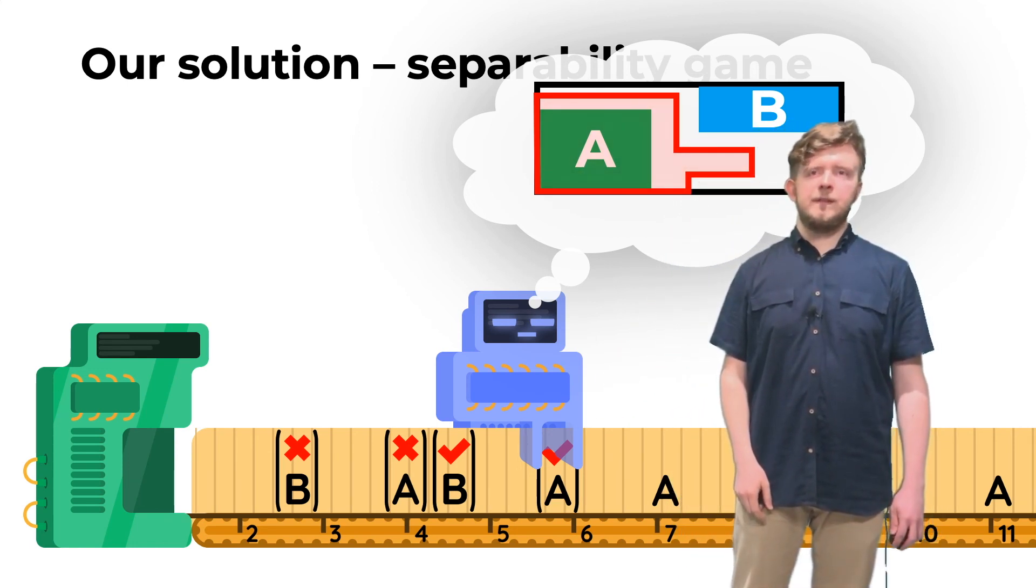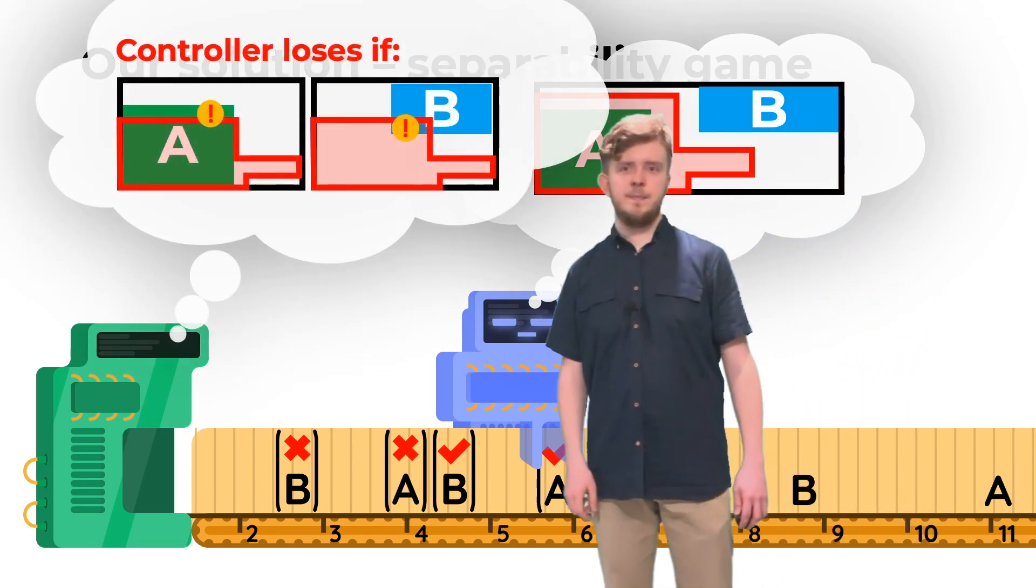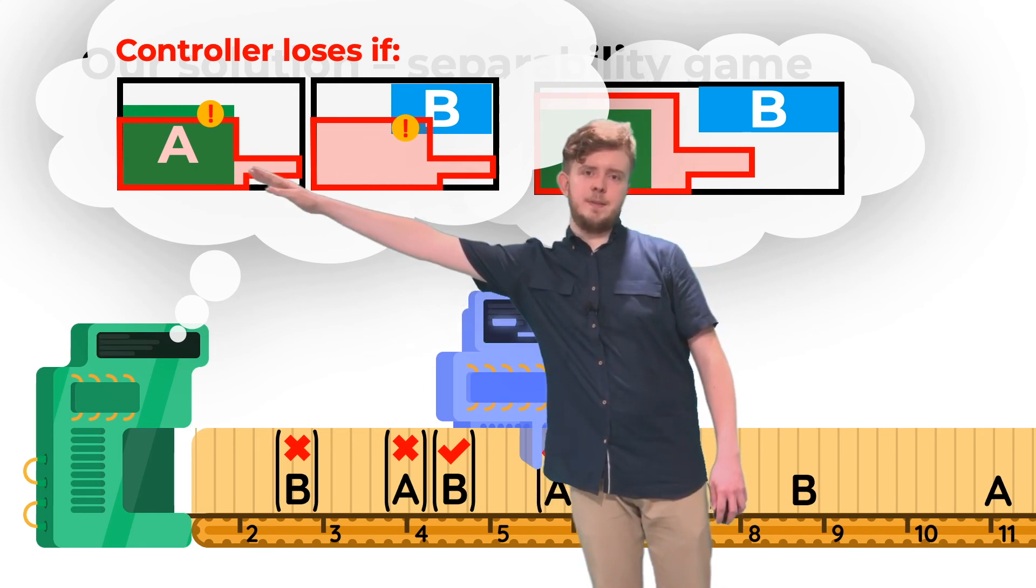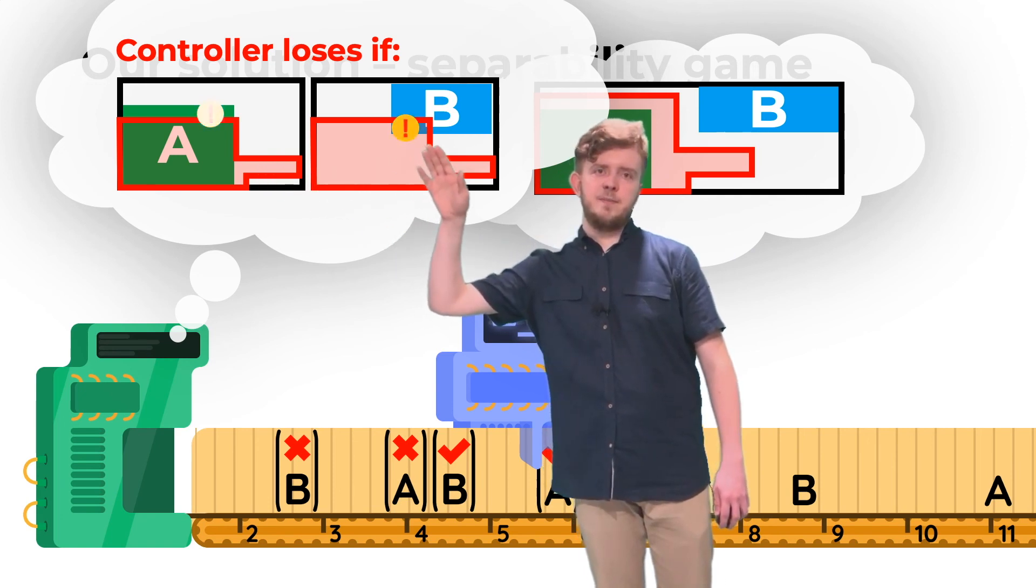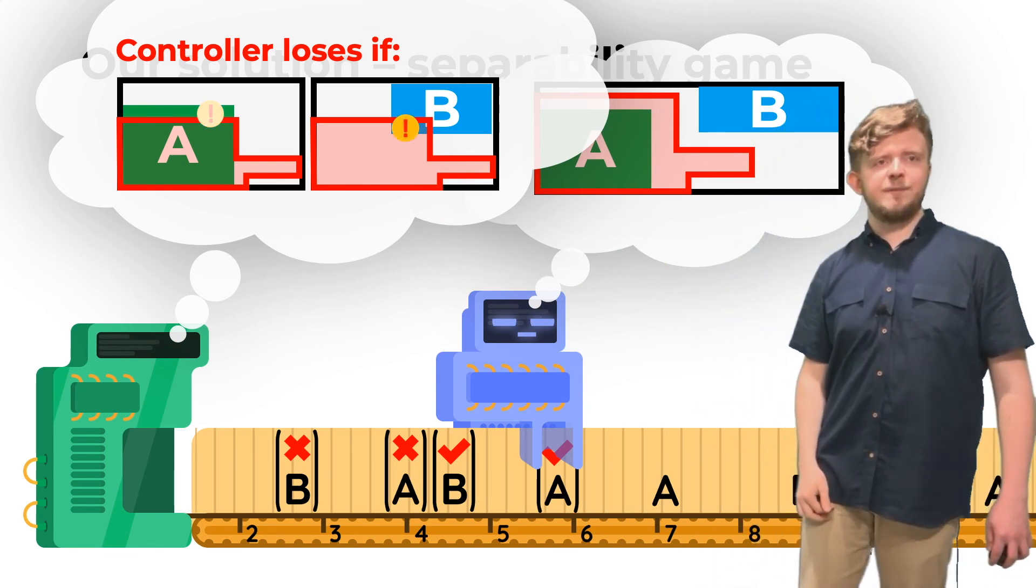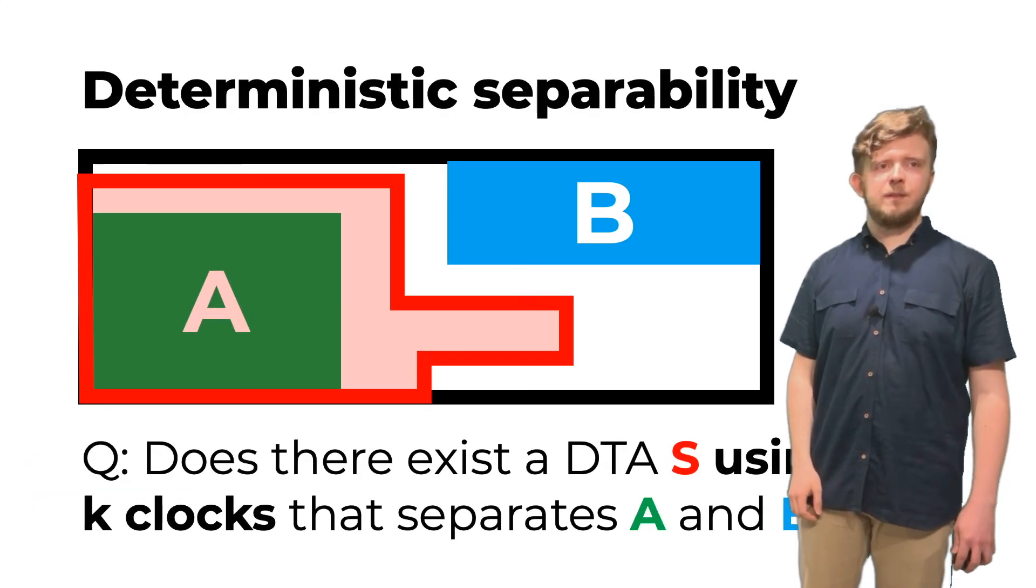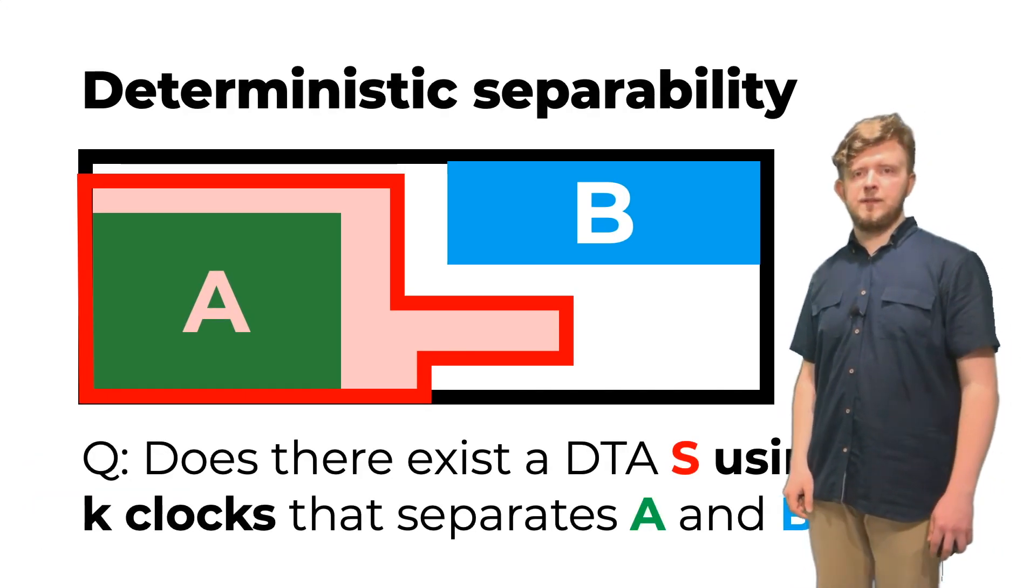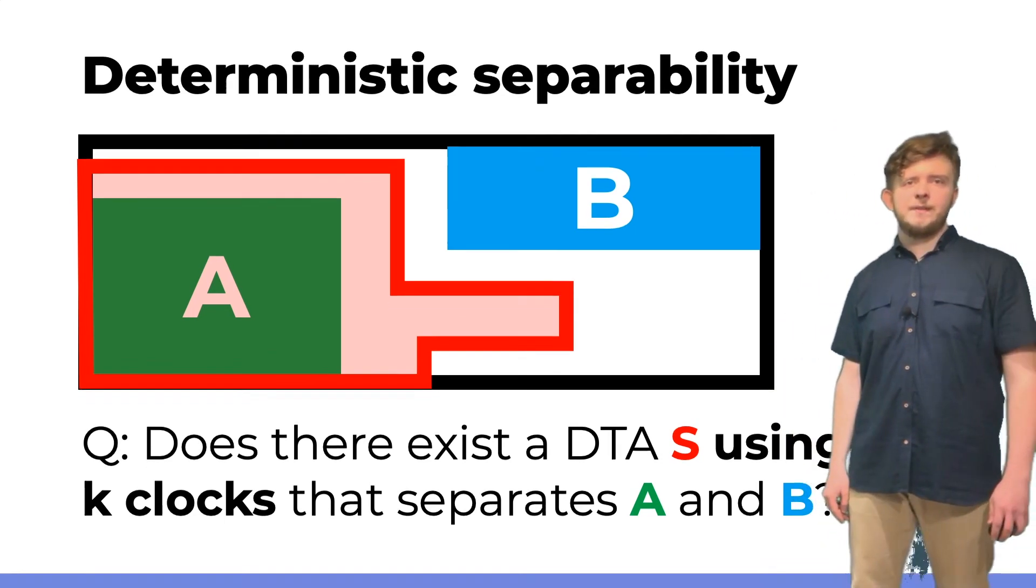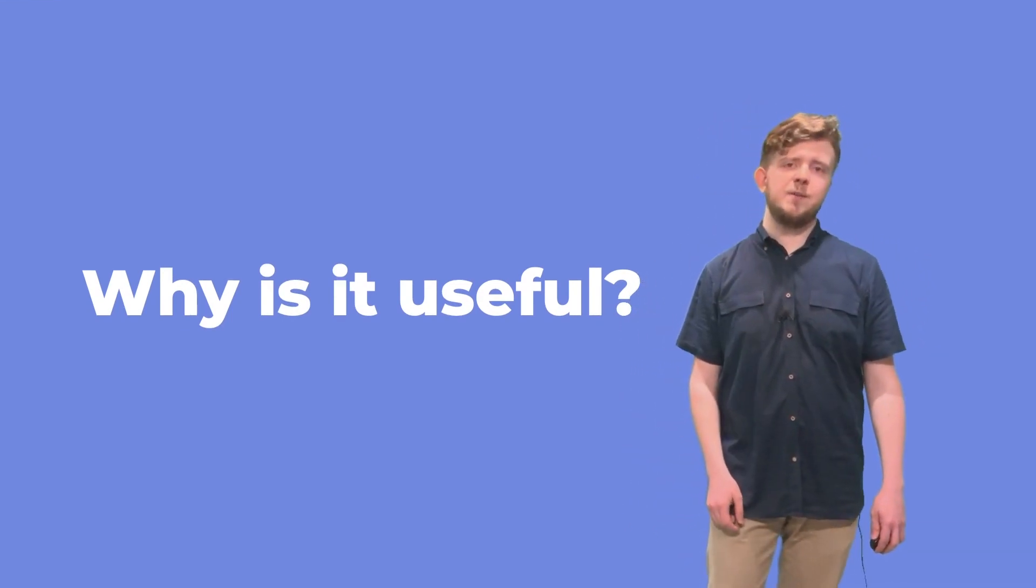In turn, the specification describes the undesired behaviors of the controller. For separability, there are two cases. Either something that should have been accepted is not accepted, or something that shouldn't have been accepted was. It turns out that this simple game characterizes exactly the separability question. Then, using our result, we may solve that question when only the number of clocks is specified in advance. I think this application shows well that our results are useful. We hope that more interesting applications will follow.